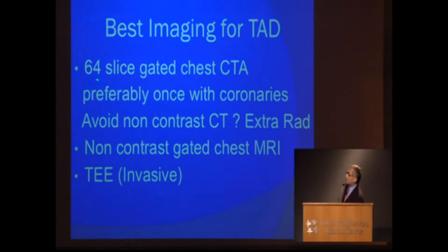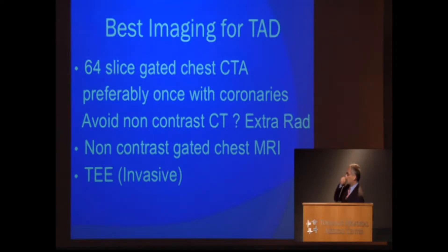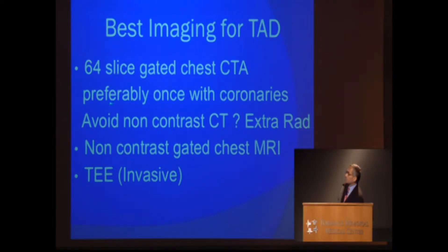The 64-slice gated chest CTA is probably one of the best modalities these days to see inside the chest — not only the valve, the heart function, the coronaries, as well as the entire thoracic aorta. However, it does expose patients to radiation.